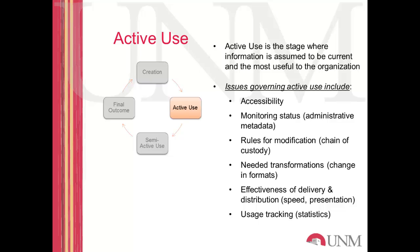Some of those involve who has access to the information — who's allowed to see and use it. Others involve who has the authority to modify the information. And finally, who has the authority to say that the information is no longer in its most valuable or most current state — who can say that the information is now outdated or obsolete. Those are some of the considerations that all information is subject to during its active use phase.